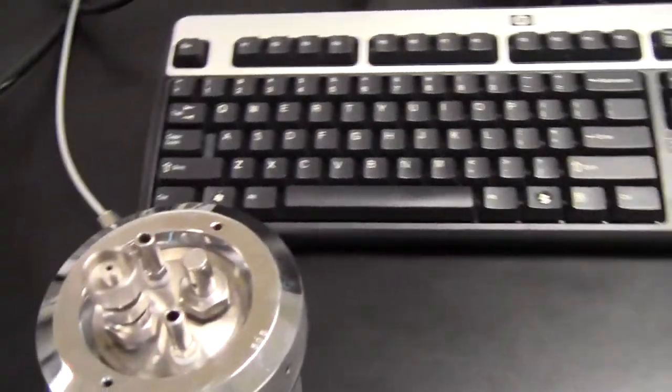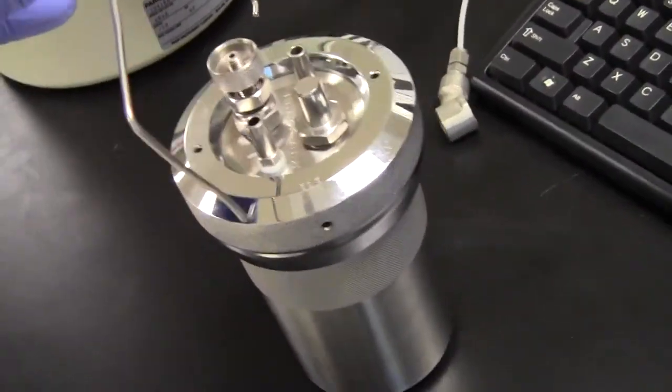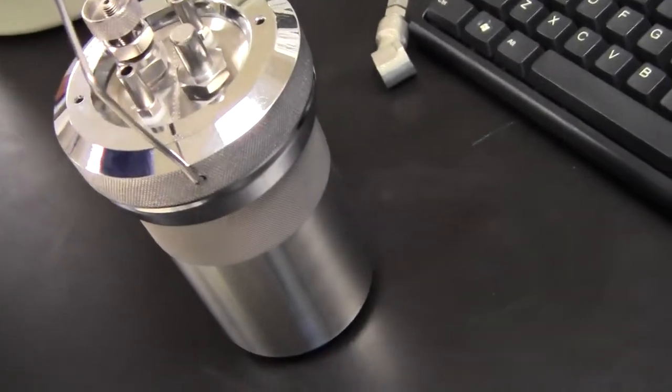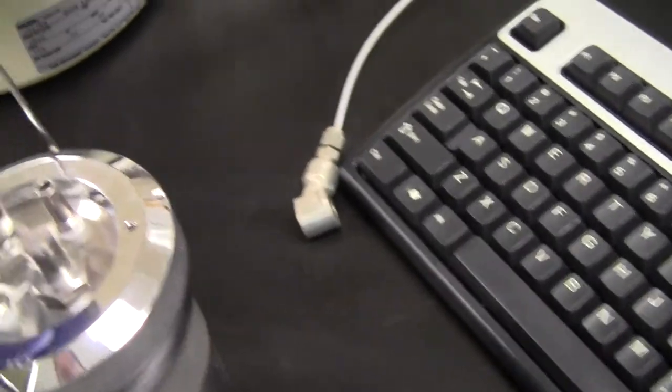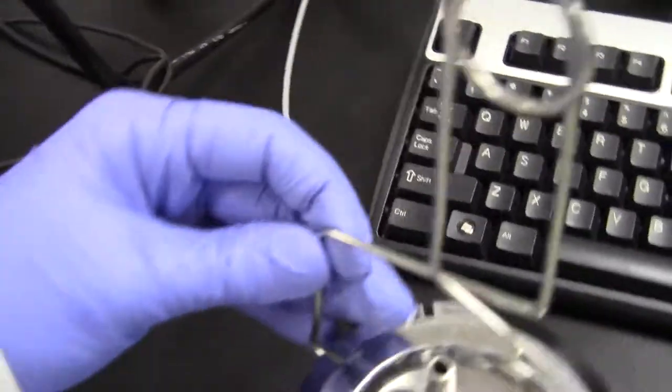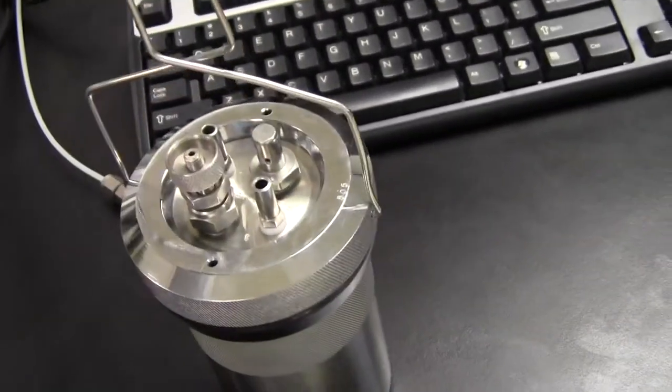And then we'll use our tweezers. See that little hole on the side? So these are not tweezers but tongs, that are special tongs just for the bomb, and we'll lift that up.